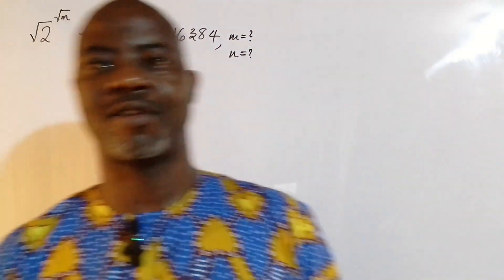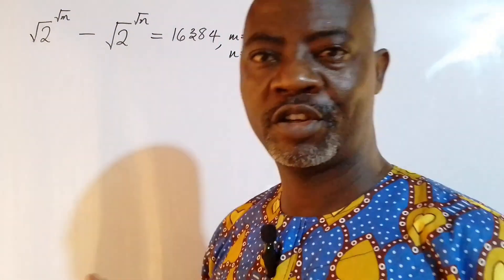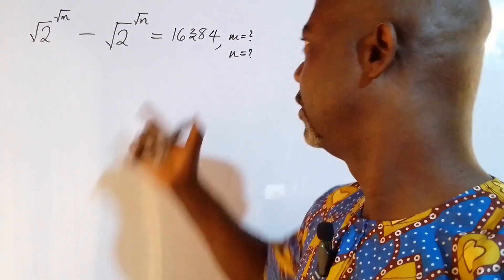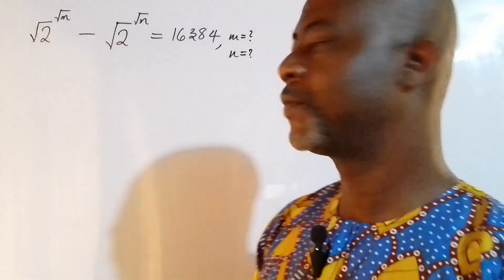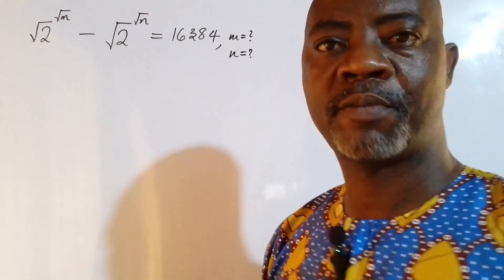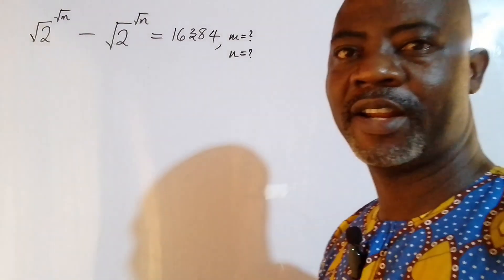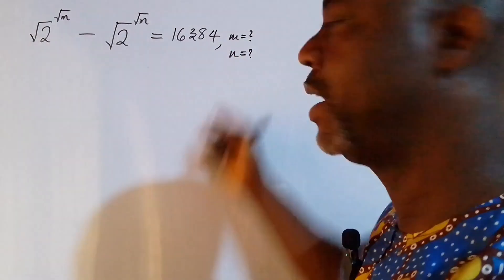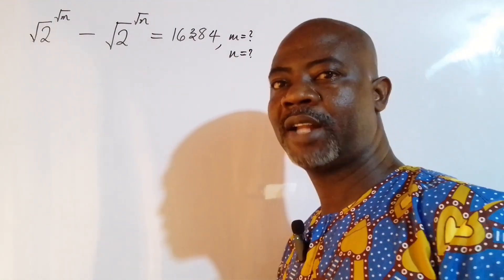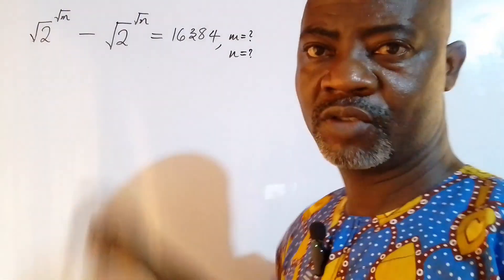Hello guys, welcome back to my YouTube channel. Today we have this beautiful exponential equation involving radicals: root 2 to the power of root m, minus root 2 to the power of root n, equals 16384. We need to find the values of m and n, so let's go ahead and see how this is done.